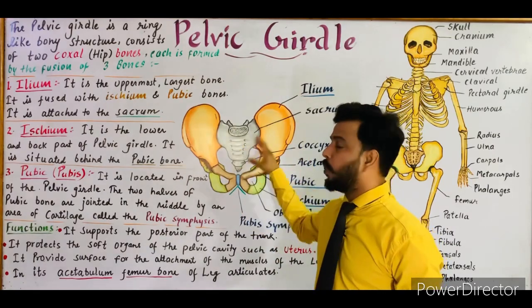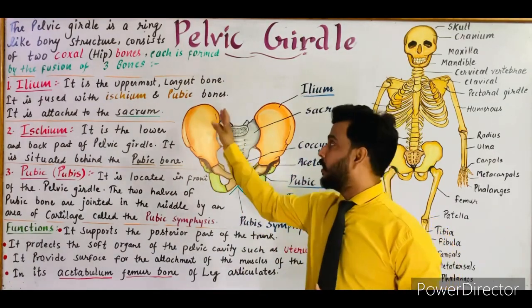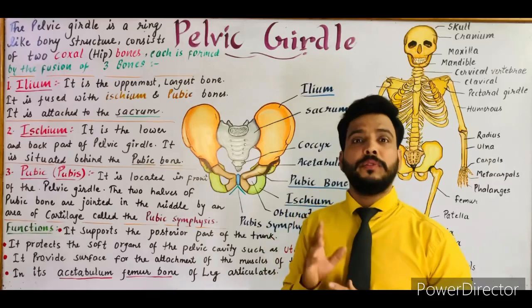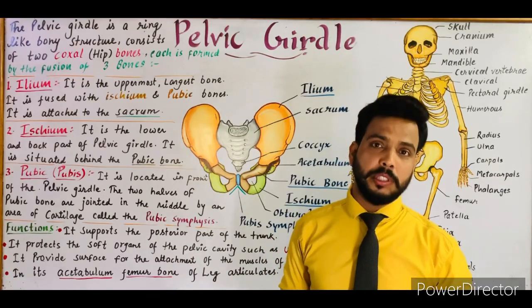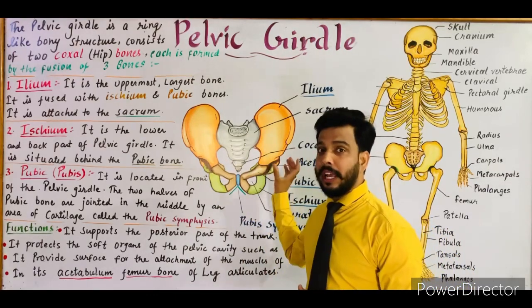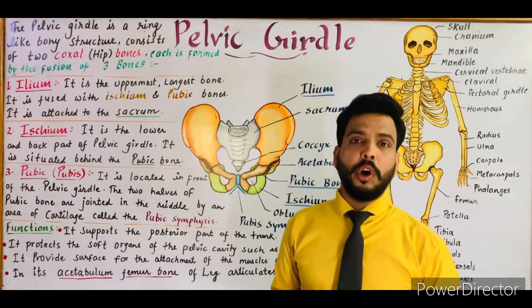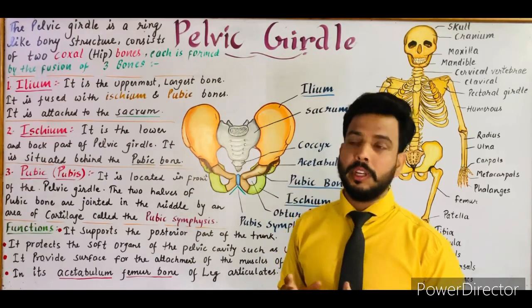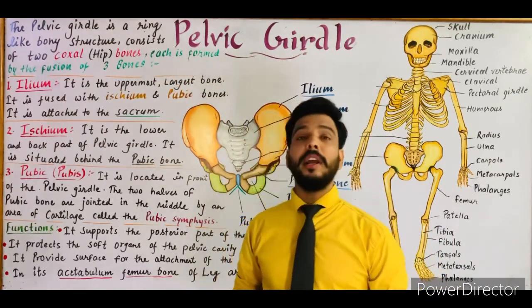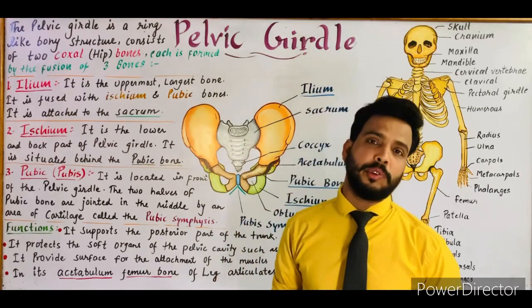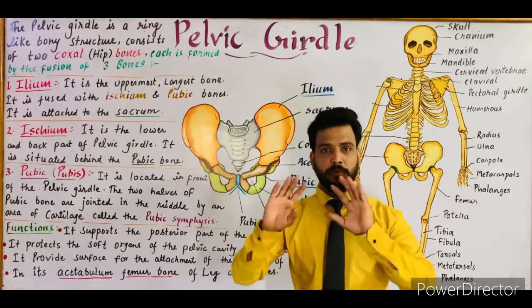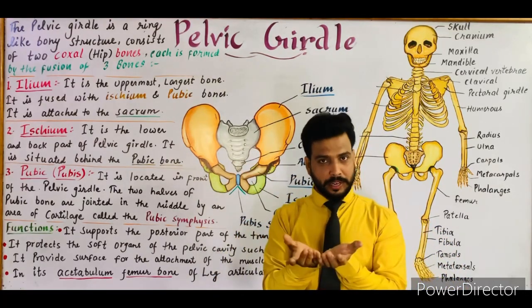This pelvic girdle consists of two halves, as you can see in this diagram. These two halves form the pelvic girdle, and each half is formed by the fusion of three bones. Each half is known as a coxal bone or a hip bone. The pelvic girdle is a ring-like bony structure, forming a ring from the back side to the front.